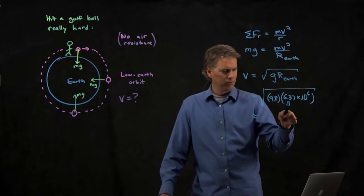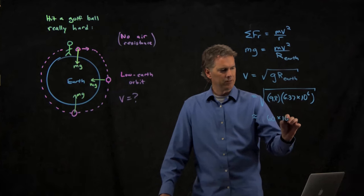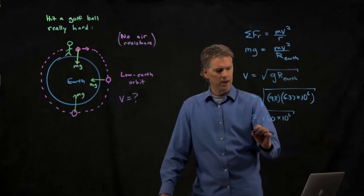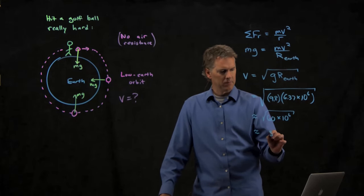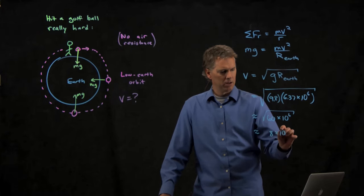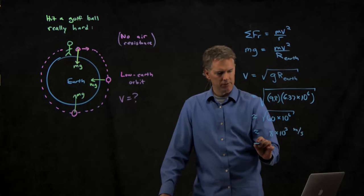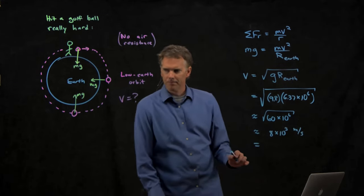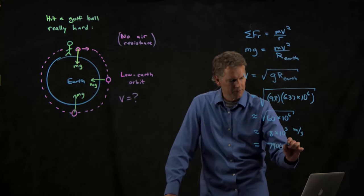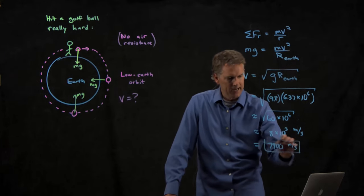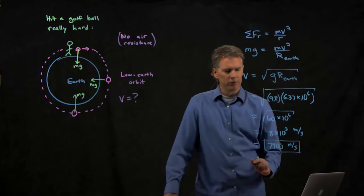So punch this into your calculator and tell me what you get. And let's just approximate it right here. This is 10. This is 6. So I'm square root of 60 is pretty close to 8, right? So that's got to be 8 times 10 to the 3. And the units are, of course, meters per second. Did anybody get an actual answer for that? 7,900. Okay. So we were pretty close on our guess. 7,900 meters per second.